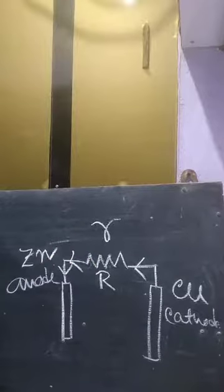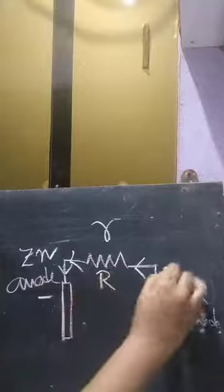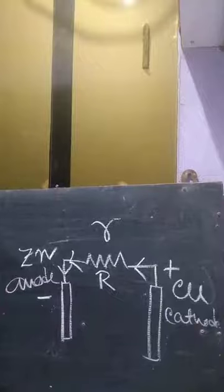This is the copper cathode and this is the zinc anode. Current flows from cathode to anode. Since anode is negative and cathode is positive, electrons flow from the zinc anode toward the copper cathode. Therefore, electron flow and conventional current flow are always opposite to each other.